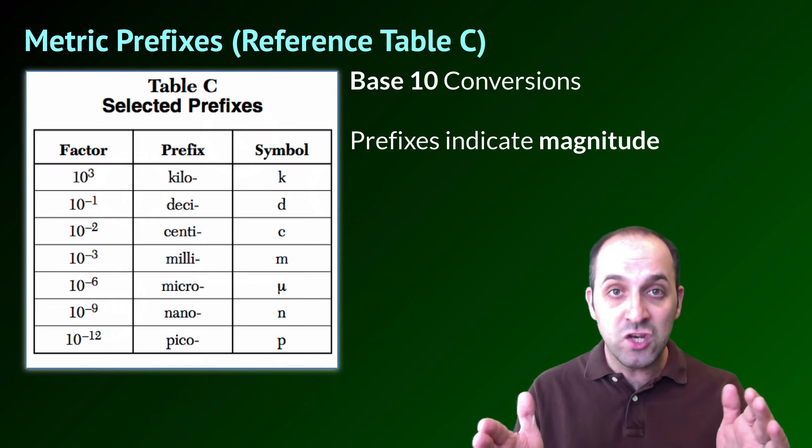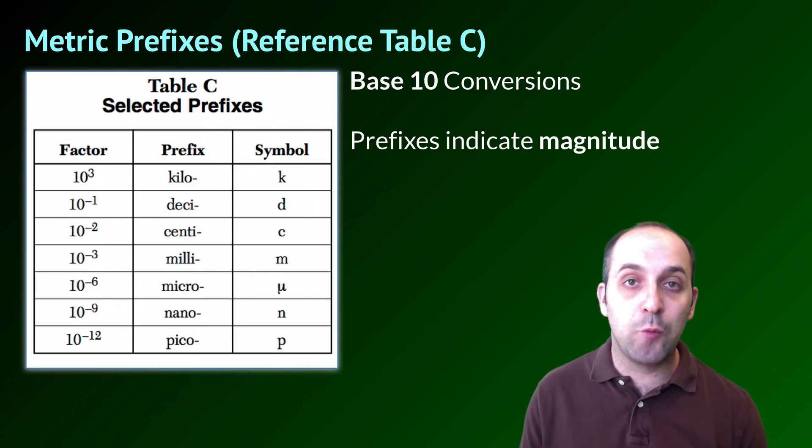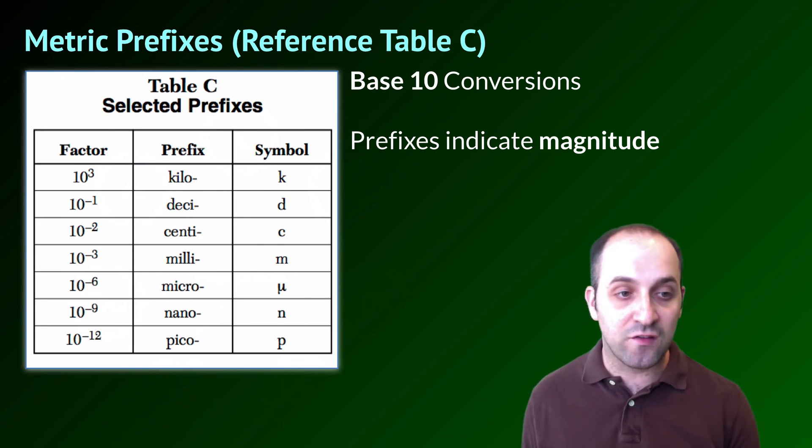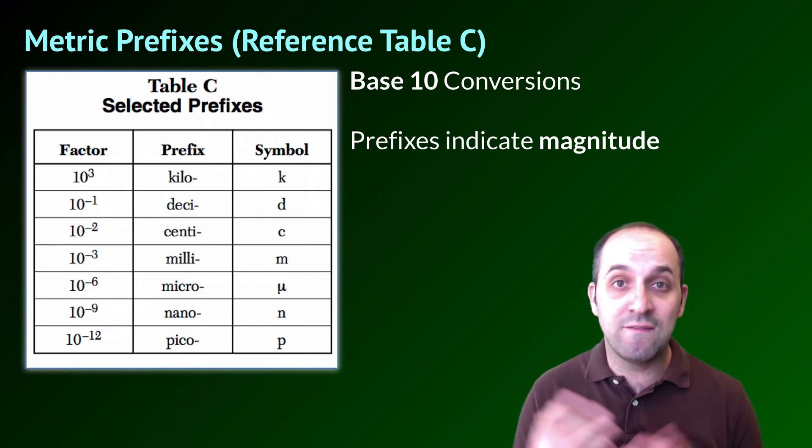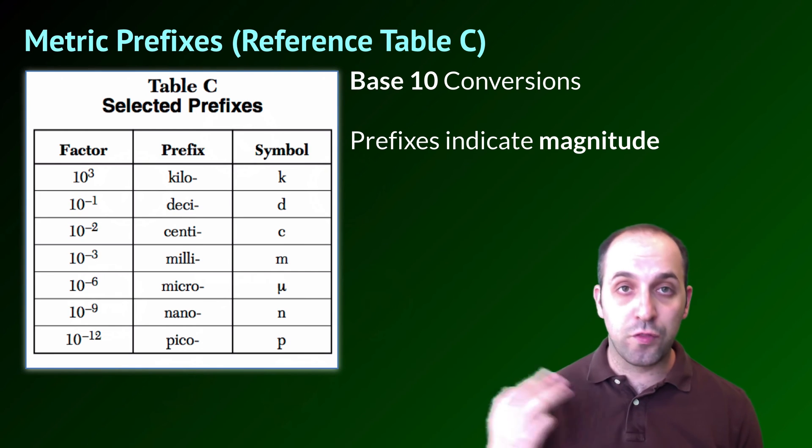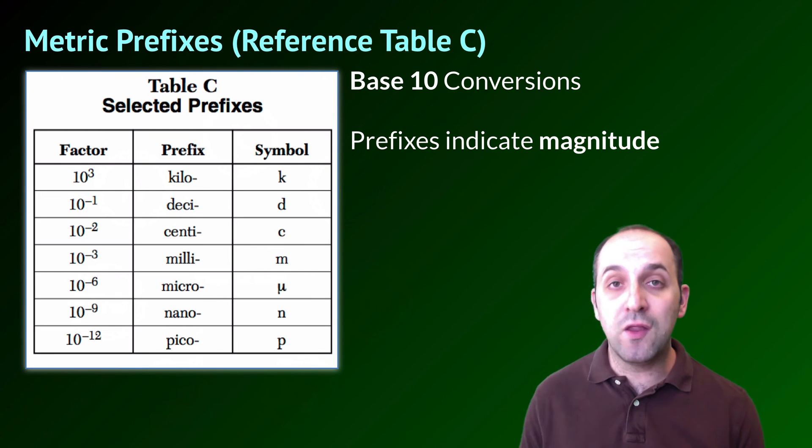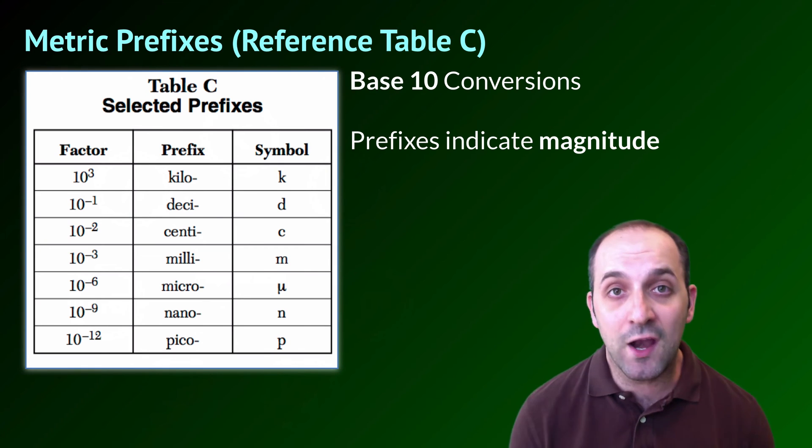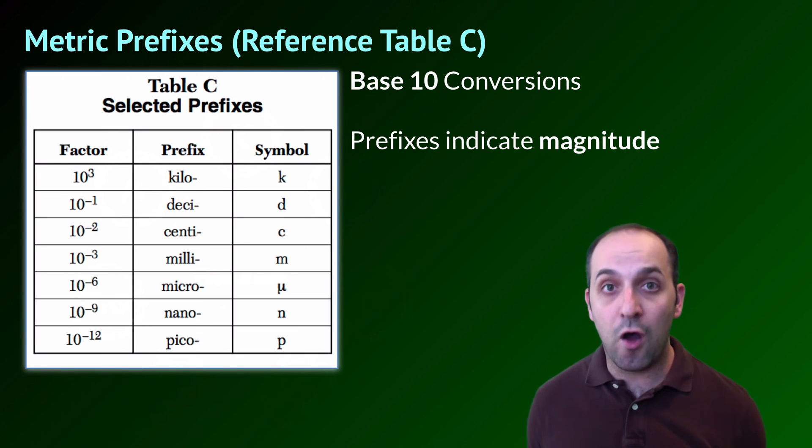Outside of that range, every three additional powers of 10 is given another prefix. So, for instance, if you go up another power of three from kilo, you'll be at 10 to the sixth, and that's called mega, which you don't even have to know. It's not on this reference table. If you go down another three powers of 10 from milli, you'll be at 10 to the negative sixth, which is micro, and another three powers of 10 from there brings you to 10 to the negative nine, or nano, or a billionth of a base unit, and so on and so forth all through this table.